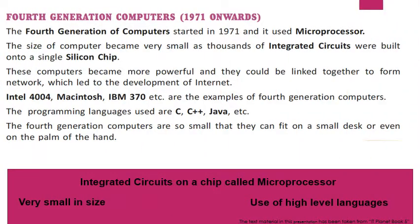Coming to fourth generation computers — they make use of microprocessors. A microprocessor controls all the functions of the CPU (central processing unit), acting as an artificial brain. The entire function of the CPU is controlled by a single integrated circuit. These computers became more powerful and could be linked together to form networks, which led to the development of the internet.